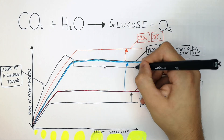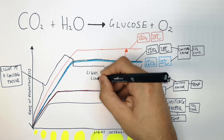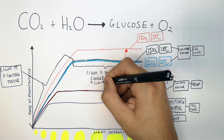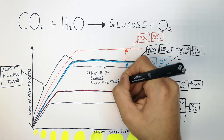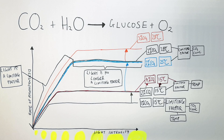However, when the line levels off, light is no longer a limiting factor because no matter how much light you add, the rate of reaction for photosynthesis does not increase.